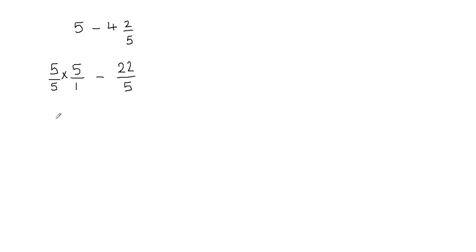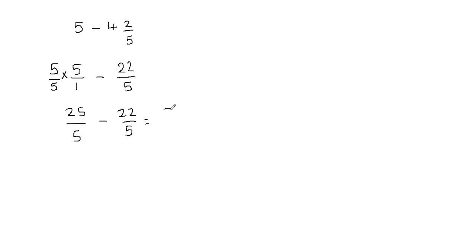Now I'm going to multiply numerator by numerator and denominator by denominator. 5 times 5 gives me 25, and 5 times 1 gives me 5. Then I add the minus sign and leave the second fraction as 22 over 5. Now I have the same denominators and can subtract the numerators: 25 minus 22 gives me 3, and the denominator stays as 5.